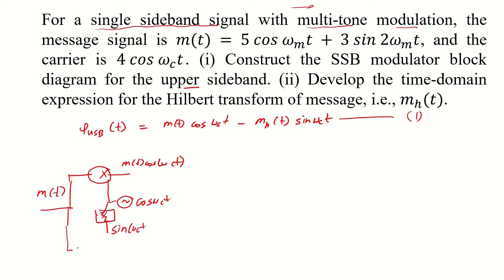And in the meanwhile we have a filter that is a Hilbert transform filter h h of f. The output of that filter would change the message signal to m h of t.